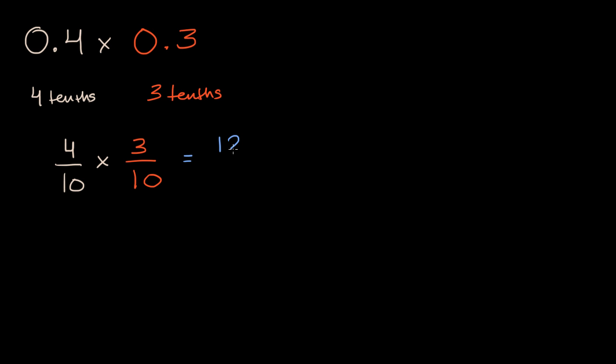Well, if we multiply the numerators, we get 12. We multiply the numerators, we multiply the denominators, you get 100. So you get 12 hundredths. So if you wanted to write that as a decimal, it would be 0.12. 12 hundredths.